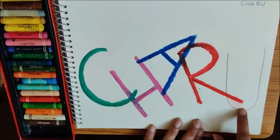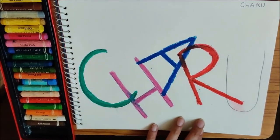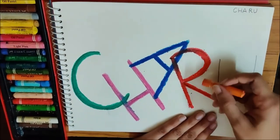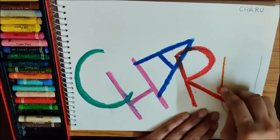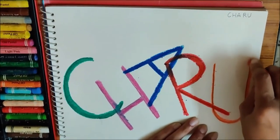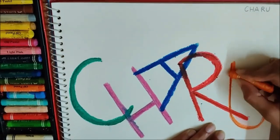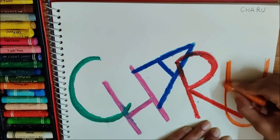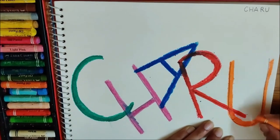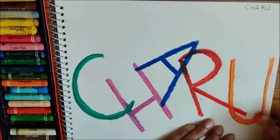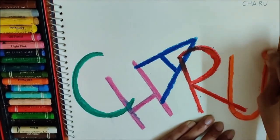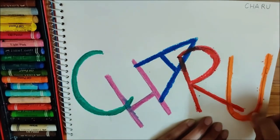Now, the last letter is left. I have to change the colour. Now, I am going to take orange colour. I will trace it first. Now, I am going to thicken it.